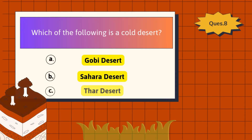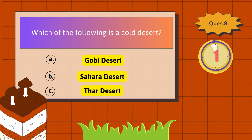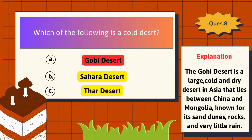Which of the following is a cold desert? The correct answer is the Gobi Desert. The Gobi Desert is a large, cold, and dry desert in Asia that lies between China and Mongolia, known for its sand dunes, rocks, and very little rain.